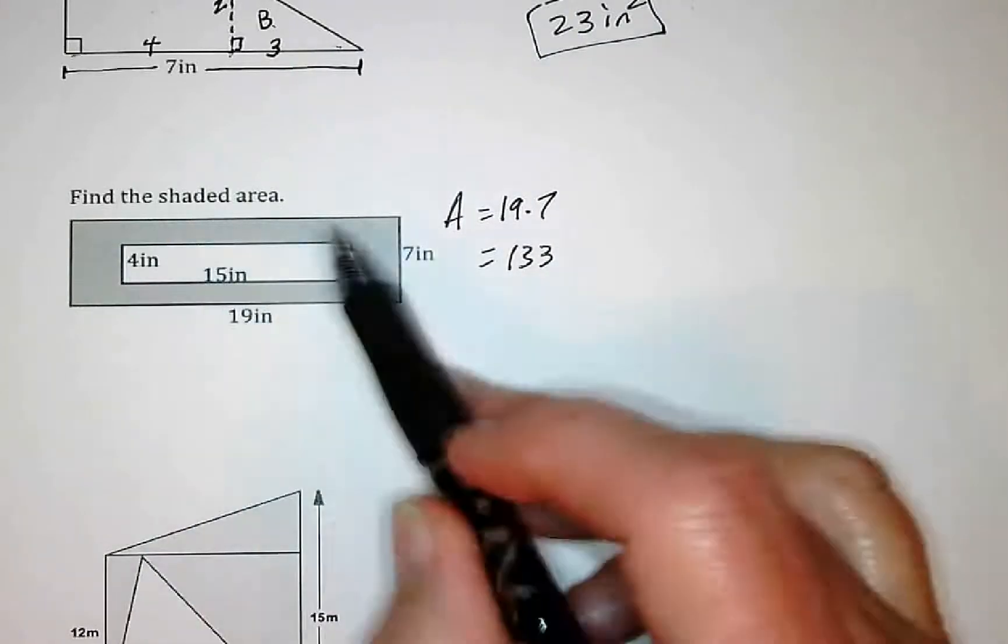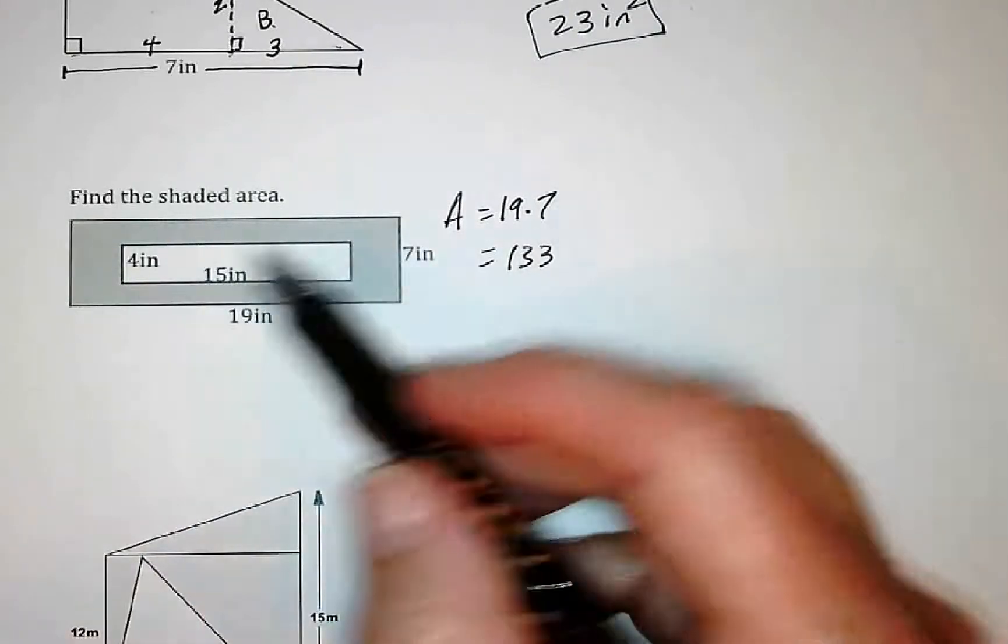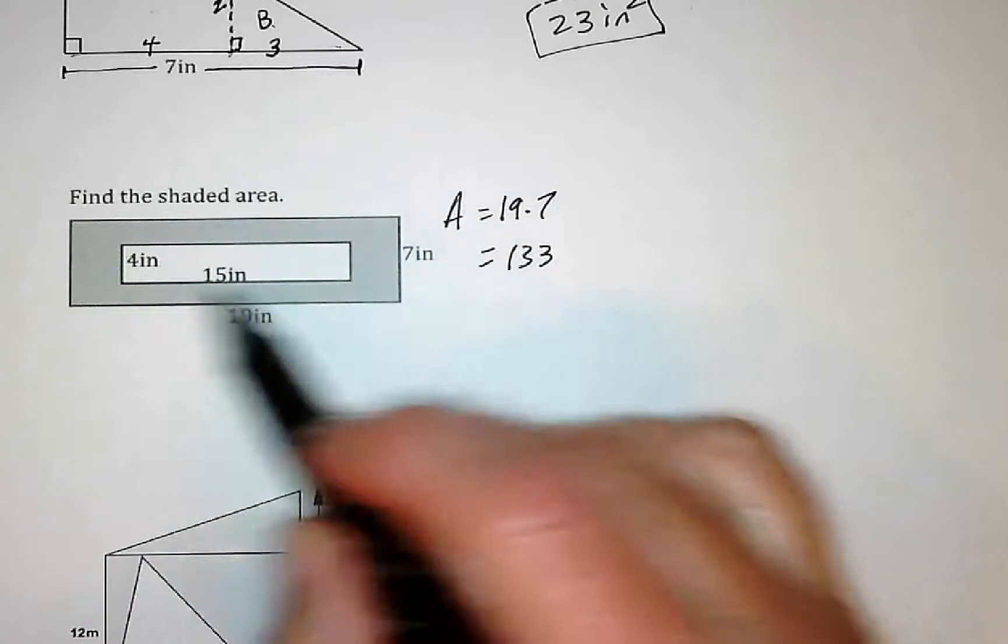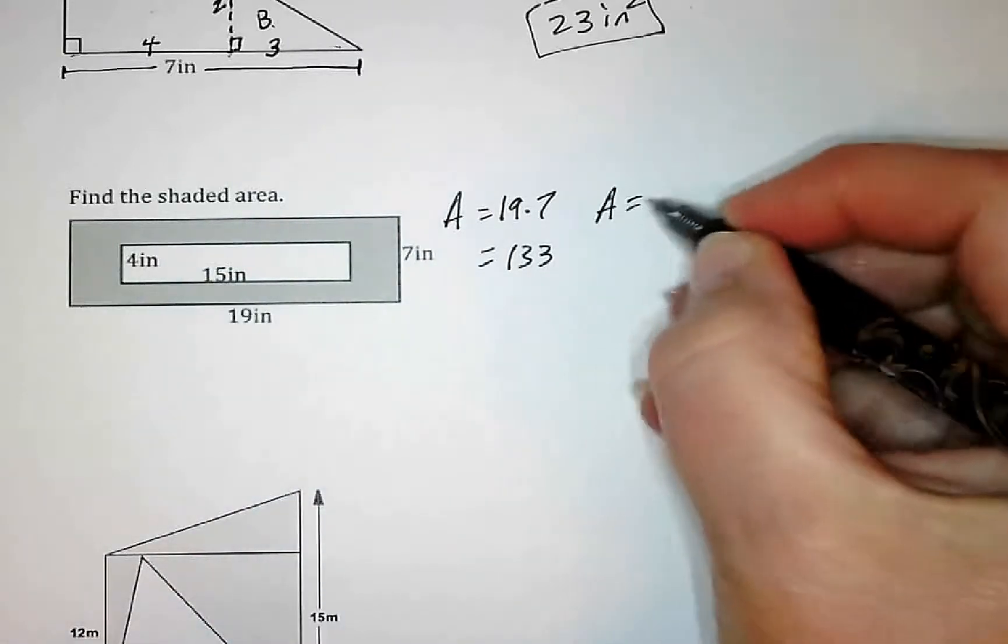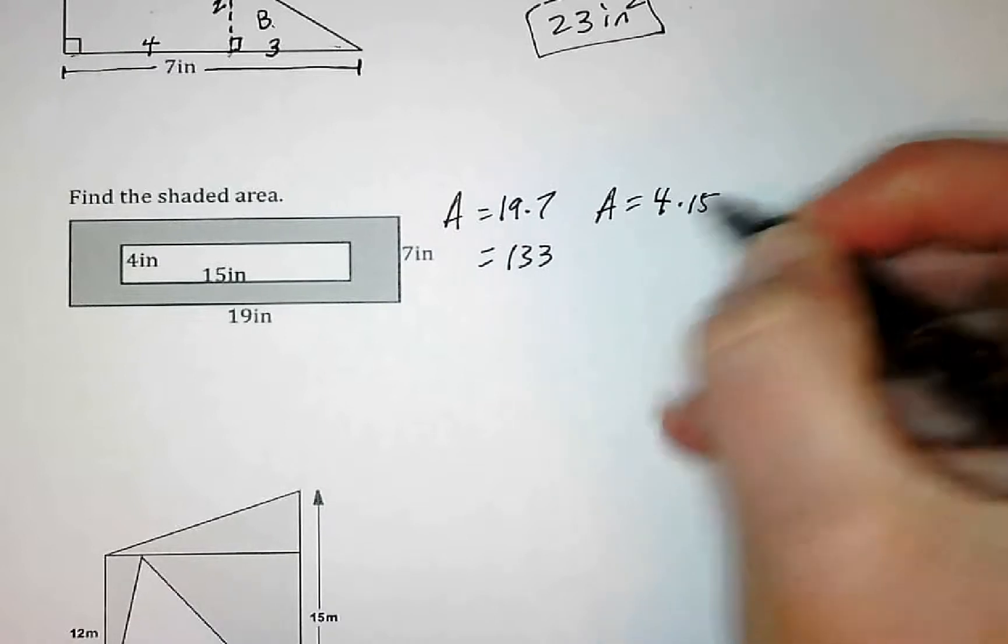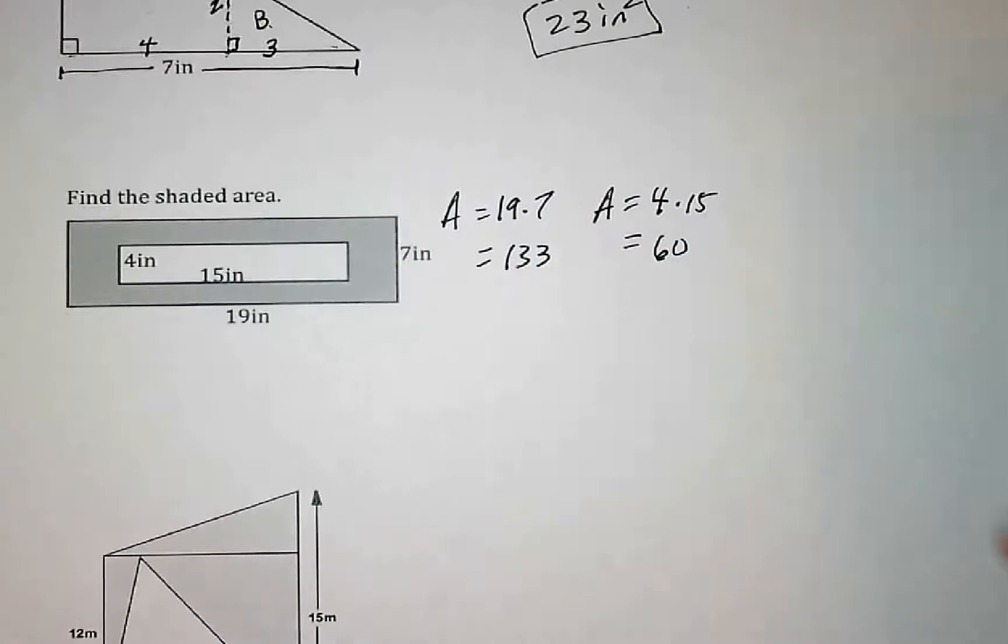So 133 would be if the whole thing was shaded in. But I don't want the whole thing, I just want this piece. So I need to take out this white part. That is also a rectangle. The white is 4 times 15, which is 60.